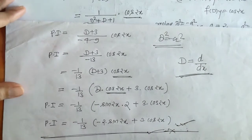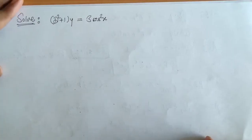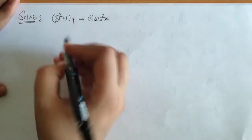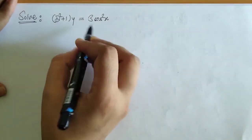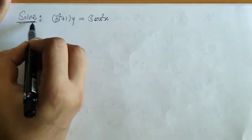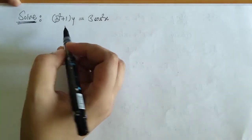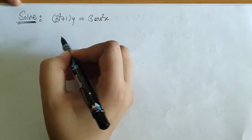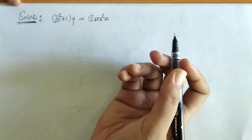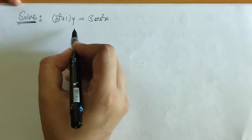In summary for Example 2: when we had the PI, we replaced D² equals minus a² to get an intermediate term. Since the denominator had only a D term and not D², we performed rationalization by multiplying numerator and denominator by (D + 3). This gave us D² in the denominator which we replaced with minus a², and then we applied the derivative operator to get the required PI. Now we have to solve the next differential equation, finding both CF and PI.